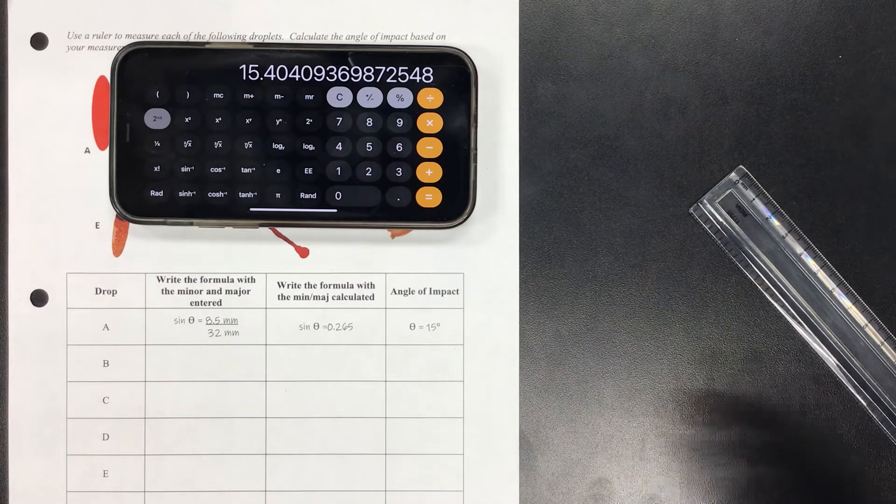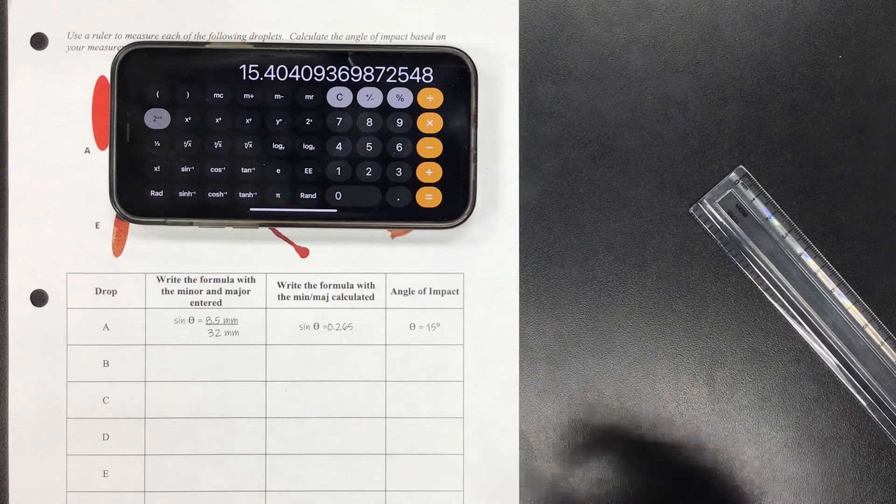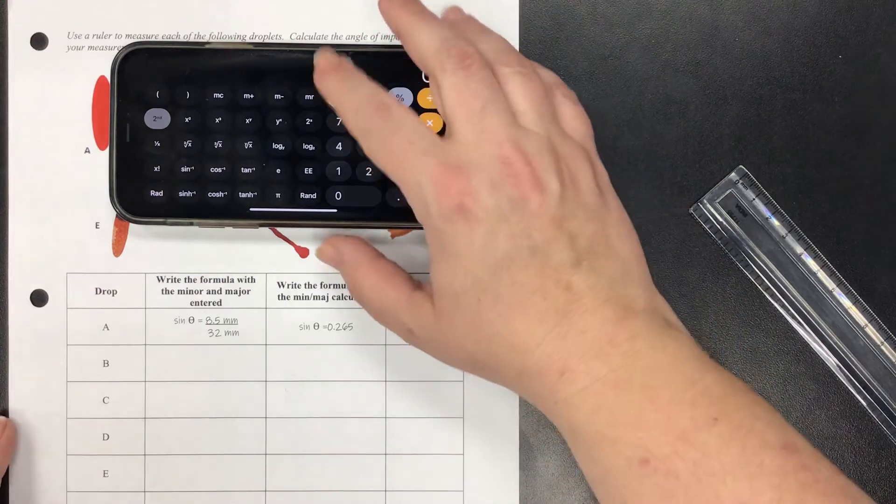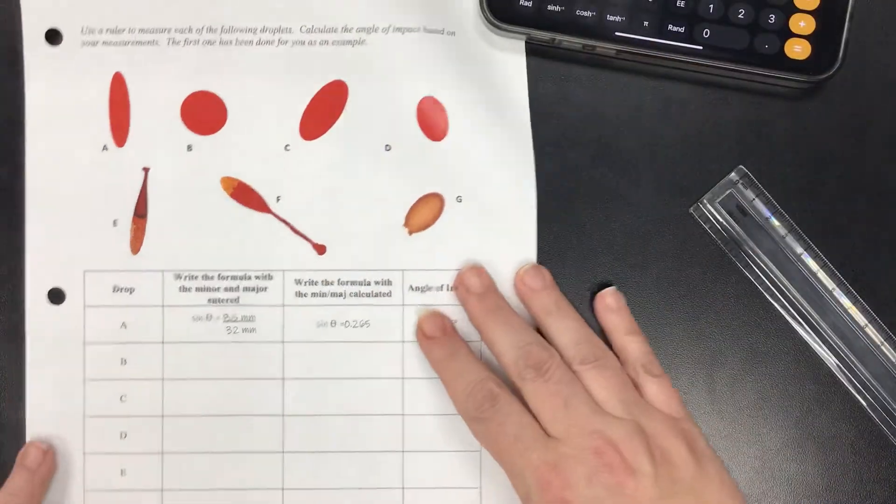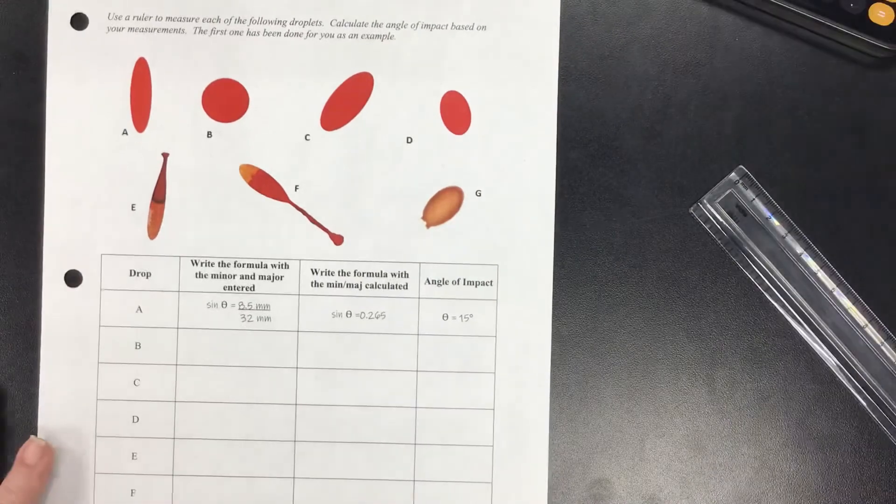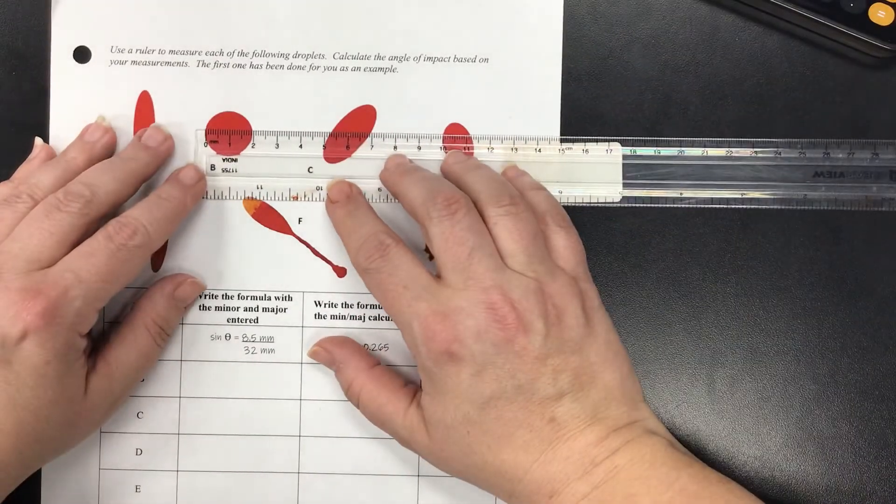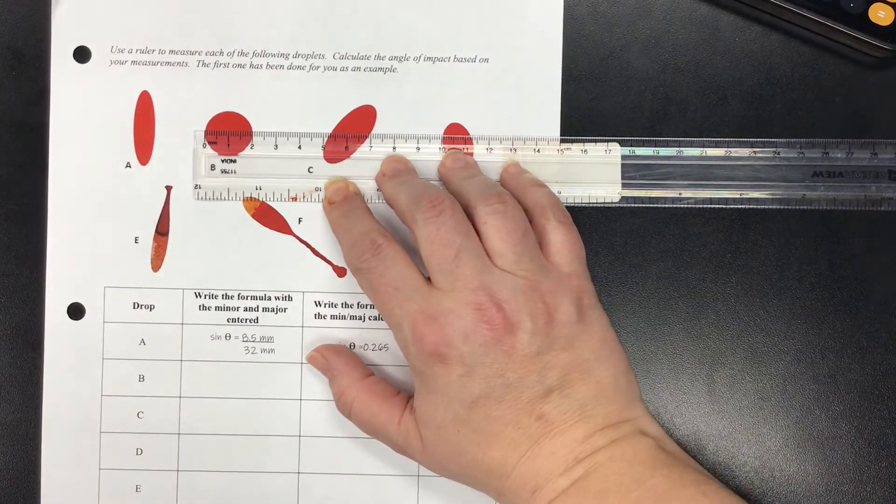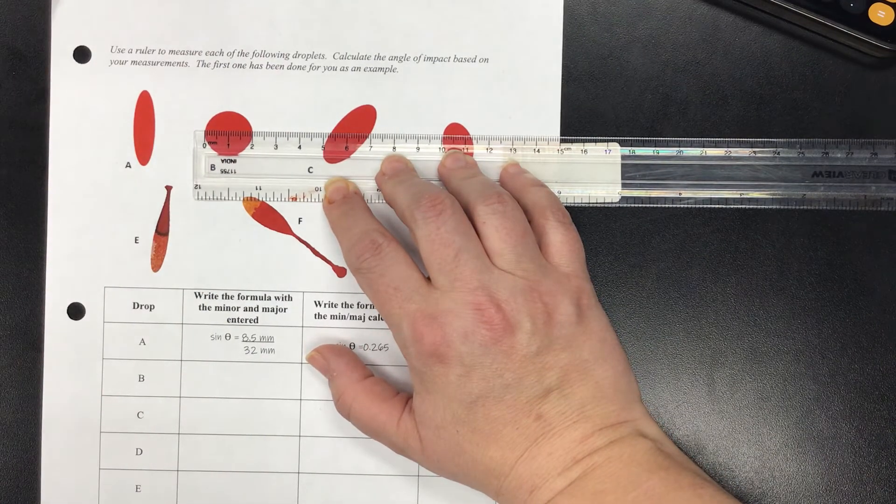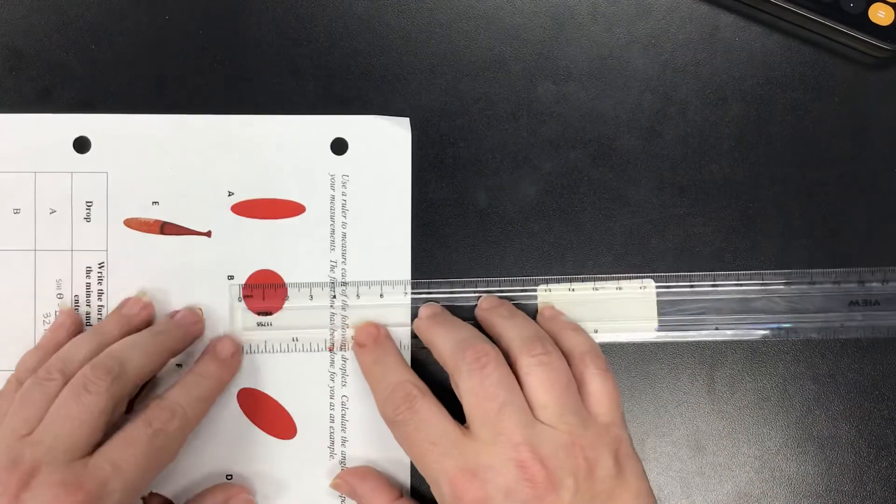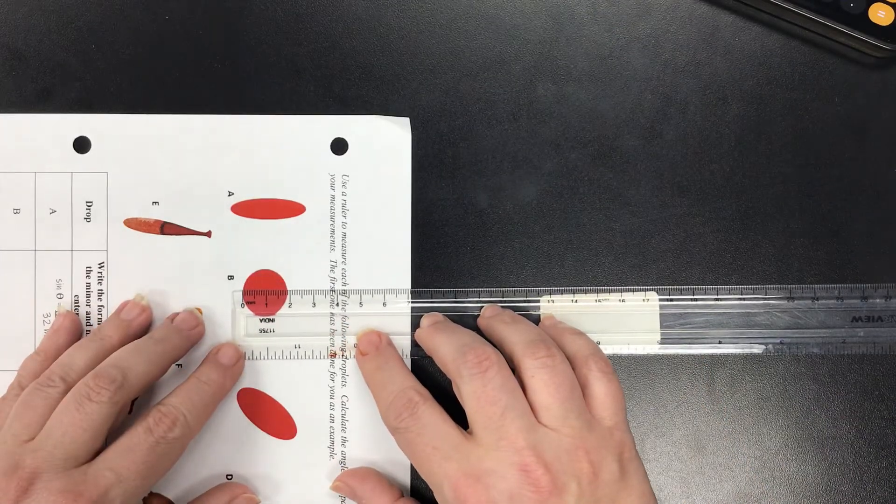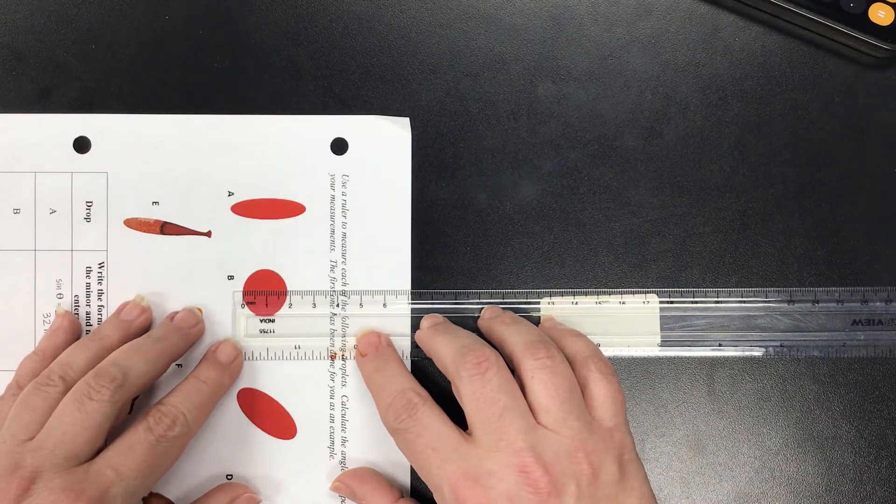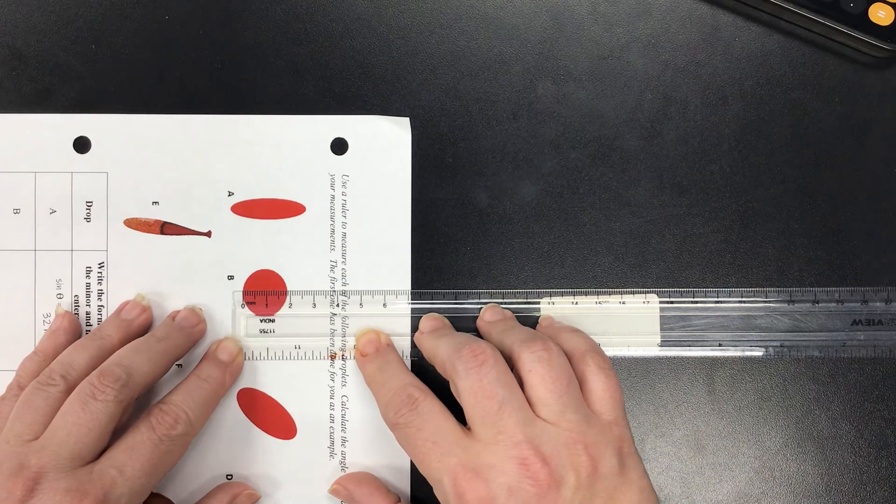Okay, so let's see what happens with B. So I'm going to go ahead and take a look and try to find my widest spot here. So my major is going to be, it looks to be about 20 millimeters. And then I'm going to turn and my minor this way actually looks to be about 18 and a half millimeters.